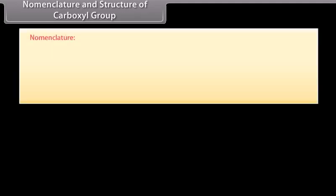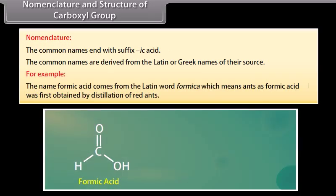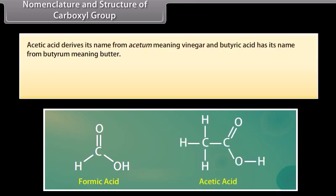Nomenclature of carboxyl group: the common names end with the suffix '-ic acid'. The common names are derived from the Latin or Greek names of their source. For example, the name formic acid comes from the Latin word 'formica' meaning ants, as formic acid was first obtained by distillation of red ants. Acetic acid derives its name from 'acetum' meaning vinegar, and butyric acid has its name from 'butyrum' meaning butter.